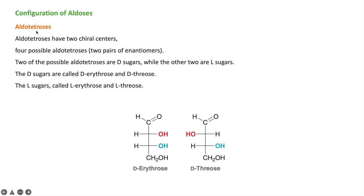Now we will look at the configuration of aldoses, starting with aldo tetroses. Aldo tetroses have two chiral centers. Using the formula 2ⁿ, where n is the number of chiral carbons, we get 2² = 4, meaning four stereoisomeric structures are possible — two pairs of enantiomers. Two of these are D-sugars and two are L-sugars. The D-sugars are D-erythrose and D-threose, and the L-sugars are L-erythrose and L-threose. In nature, only the D-forms are present.